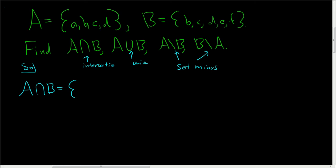So in this case, it looks like they don't have A in common, but they have B, C, and D. B, C, and D are both in A and in B, so that's just going to be B, C, D. So that part is done.